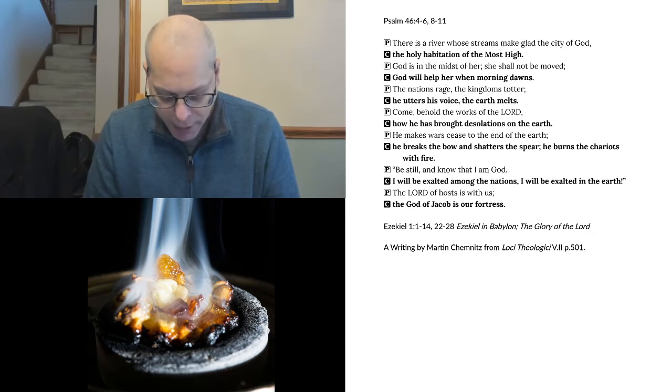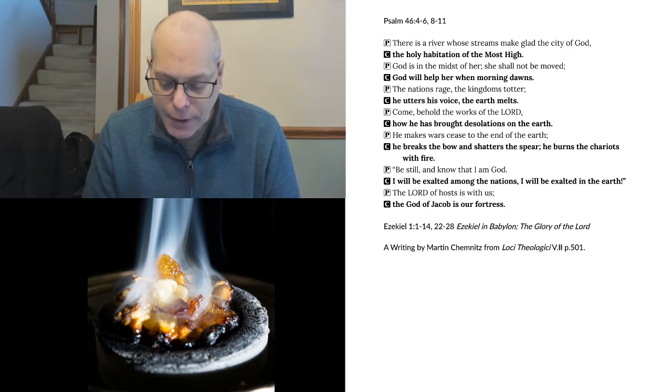Such were their faces. And their wings were spread out above. Each creature had two wings, each of which touched the wing of another, while two covered their bodies. And each went straight forward. Wherever the spirit would go, they went, without turning as they went. As for the likeness of the living creatures, their appearance was like burning coals of fire, like the appearance of torches moving to and fro among the living creatures. And the fire was bright, and out of the fire went forth lightning. And the living creatures darted to and fro, like the appearance of a flash of lightning.